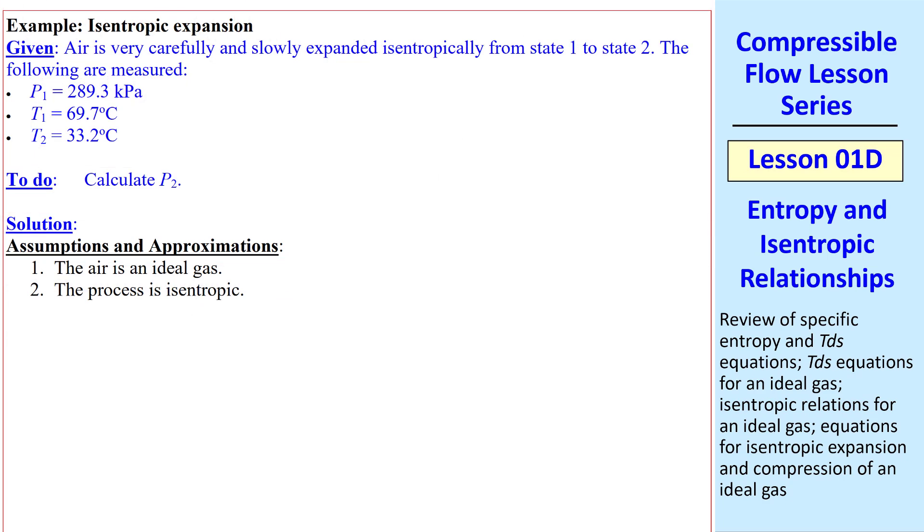Now let's do an example. Air is carefully and slowly expanded isentropically from state 1 to state 2, and we measure these properties. In thermodynamics, we would model this as a cylinder-piston arrangement, in which the piston is slowly moved up, expanding the gas in this system.